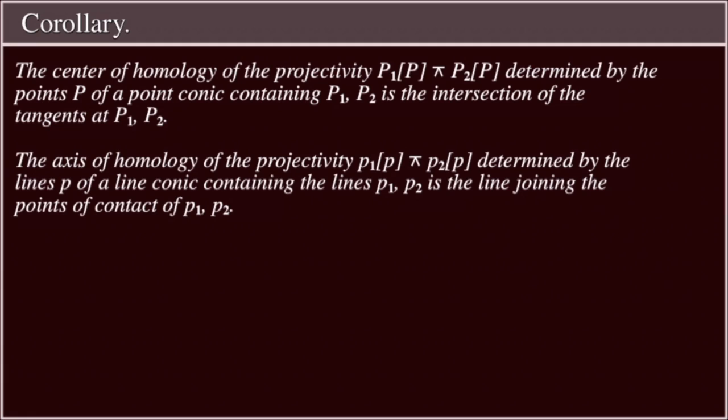The axis of homology of projectivity P₁ pencil p projective with P₂ pencil p, determined by the lines p of a line conic containing the lines p₁, p₂, is the line joining the points of contact of p₁, p₂.